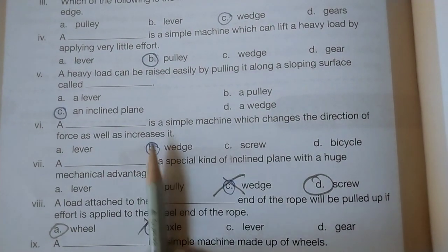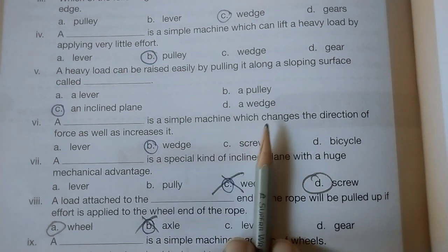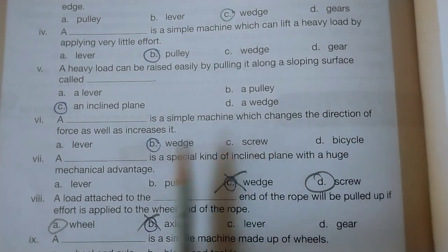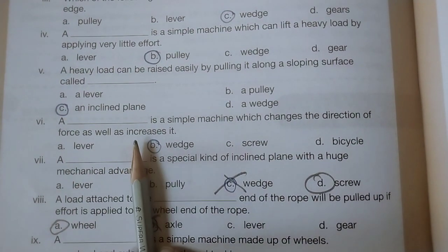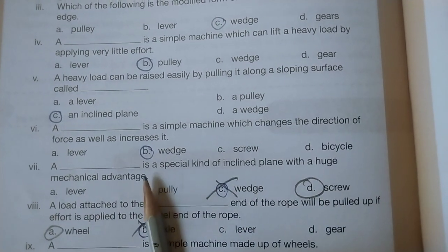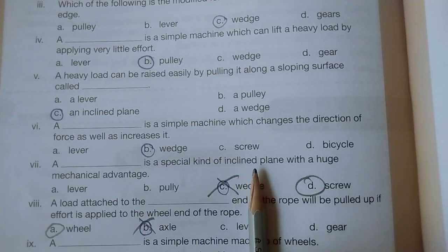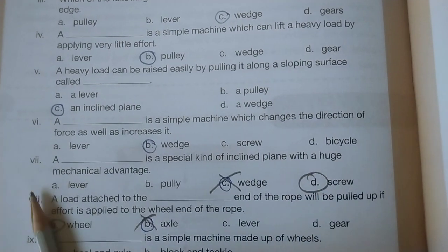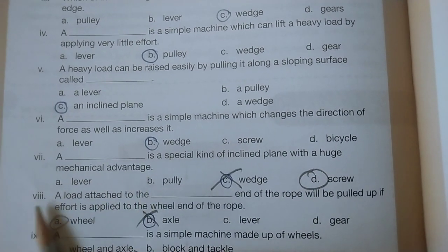Question 6: A wedge is a simple machine which changes the direction of force as well as increases it. Question 7: A screw is a special kind of inclined plane with a huge mechanical advantage.